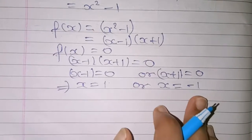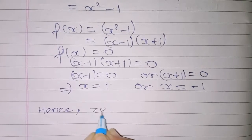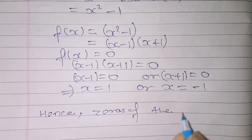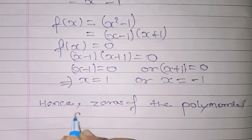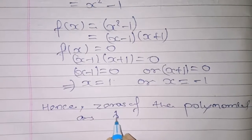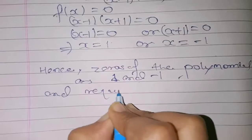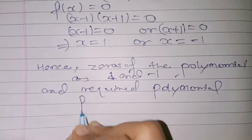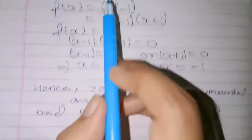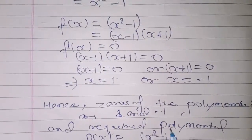तो zeros of the polynomial हमें one and minus one मिले। और required polynomial f(x) = x squared minus one है।